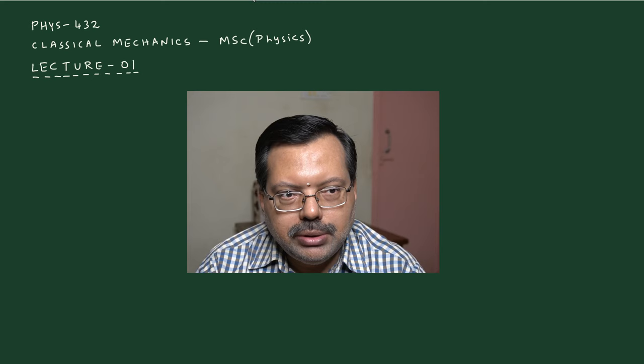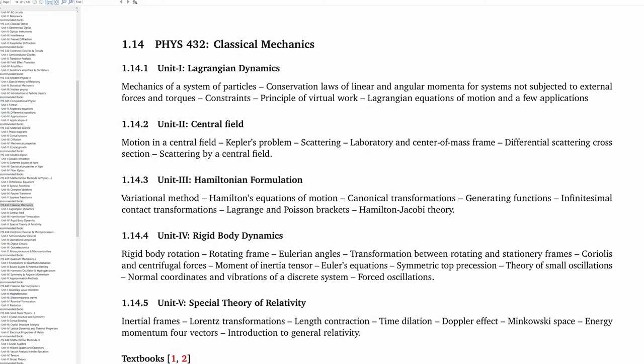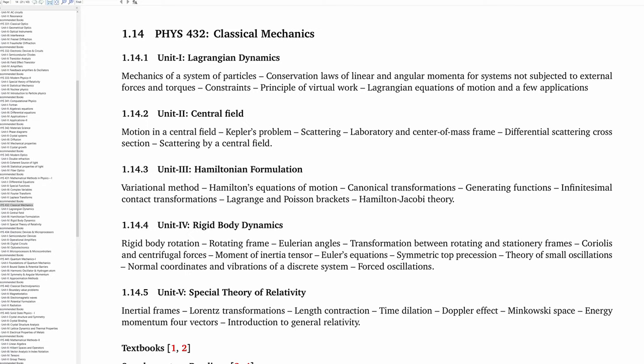Coming to the classical mechanics part, let me show you how the syllabus looks. The course code is PHYS 432. The course structure will have five units, with the entire syllabus divided into different units.